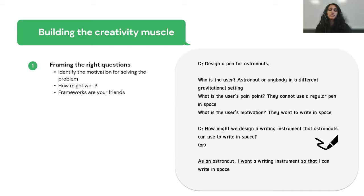Some things we can do to get better at framing: focus on user needs and not wants. Henry Ford had said that if he asked people what they wanted, they would have said faster horses — and he never would have invented the car, which solved the user need in a new and creative way.